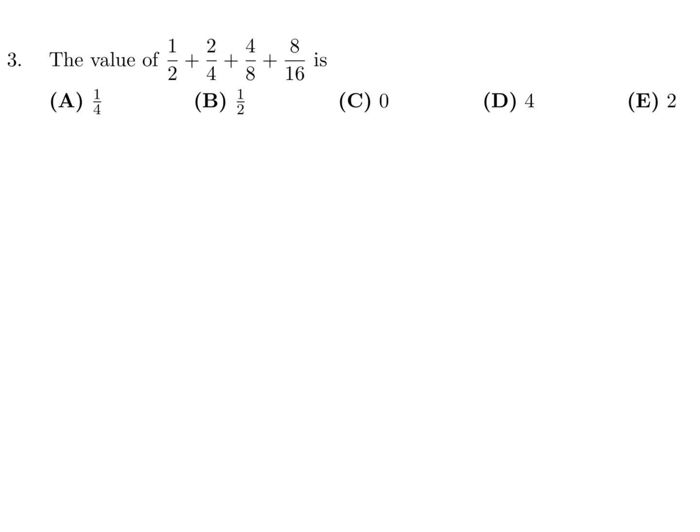The value of 1 half plus 2 over 4 plus 4 over 8 plus 8 over 16. Well, these all look like halves to me in lowest terms, and therefore you've got 4 times a half, and that is 2. And therefore, that's E.